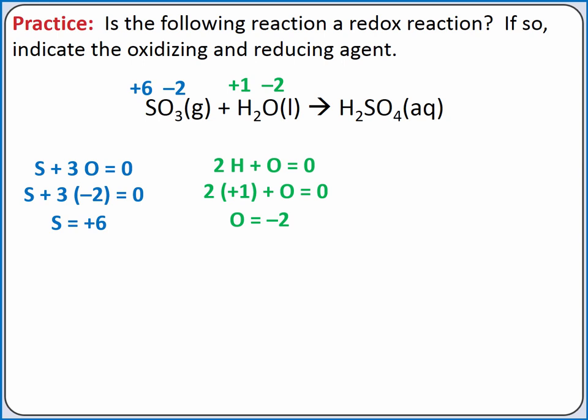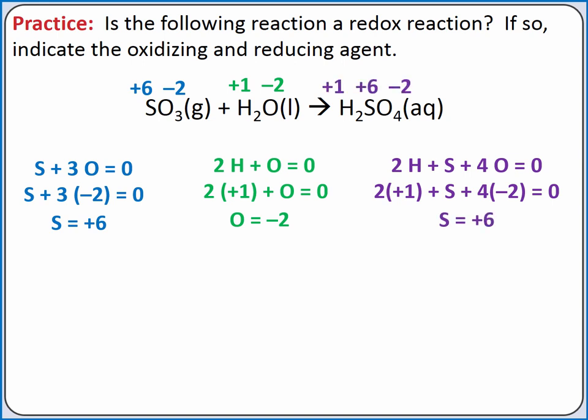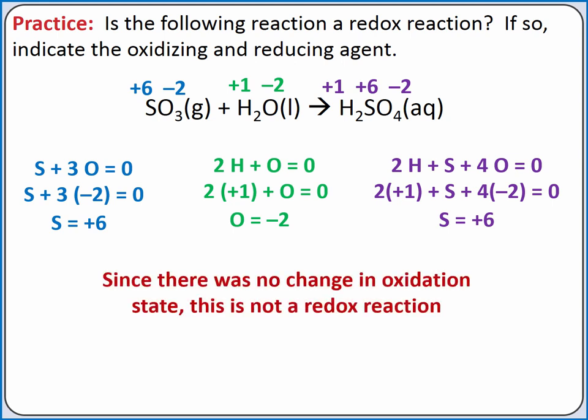And finally, for sulfuric acid, the sum of the oxidation states of all atoms in the neutral molecule is zero. So two hydrogen plus sulfur plus four oxygen equals zero. All three elements are in the table of nonmetals, but hydrogen and oxygen are highest on the list. So we assign plus one to hydrogen, negative two to oxygen, and we calculate sulfur. Sulfur's oxidation state is plus six. Since there was no change in oxidation state for any of our atoms, this is not a redox reaction.